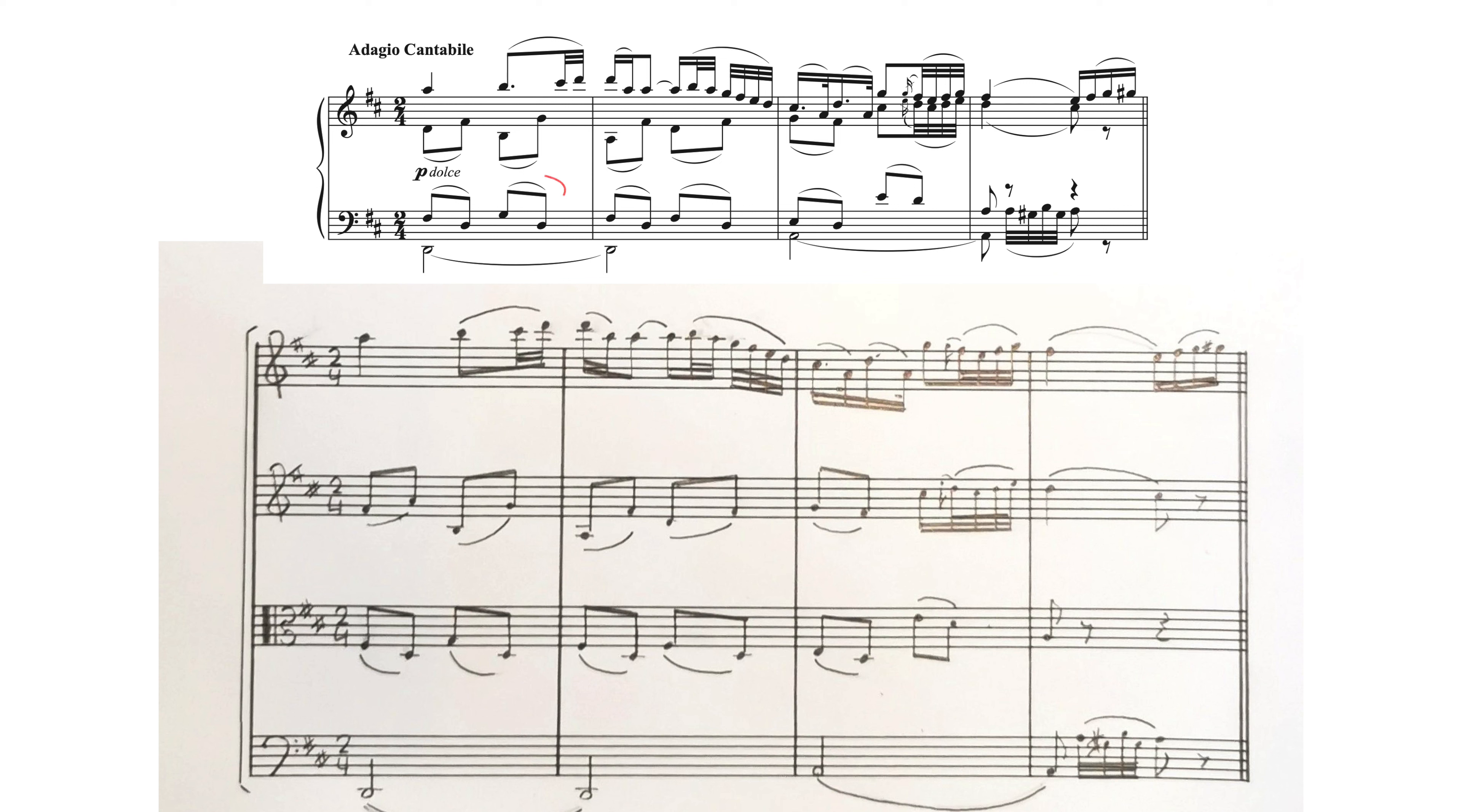So you can see here in the viola part if you look at the closed position score, the slurs are on top of the stems and just above the beams, but here in the open position score they've been moved to their correct place. They are on the opposite side of the stem.